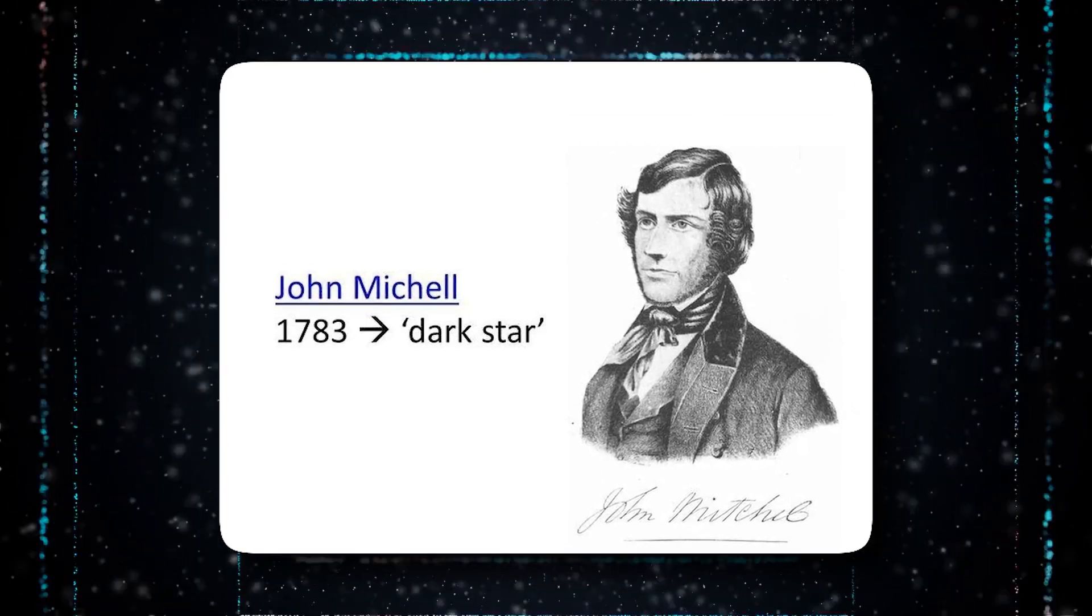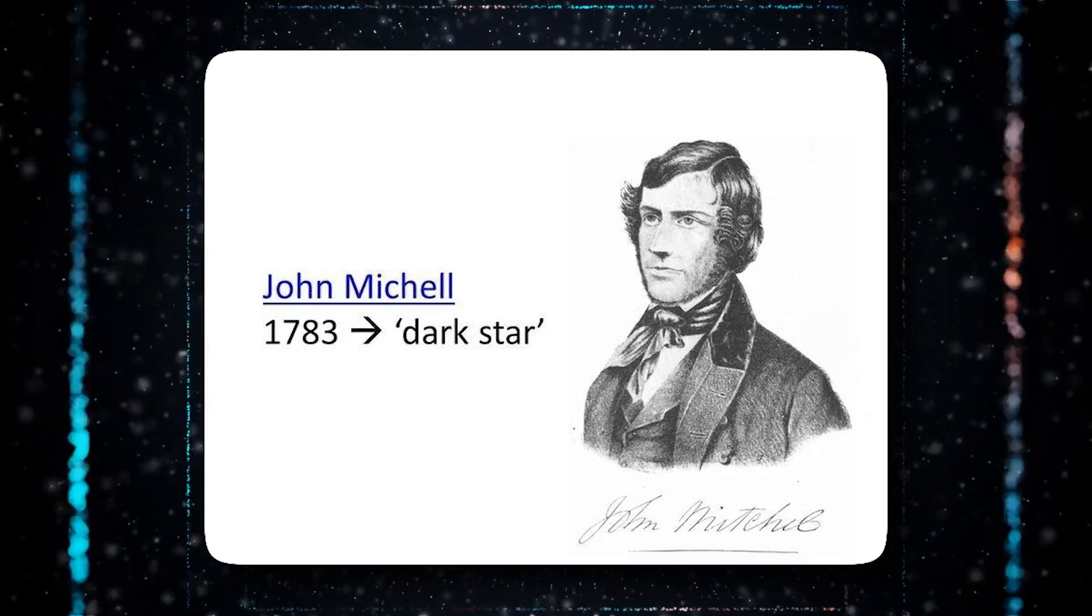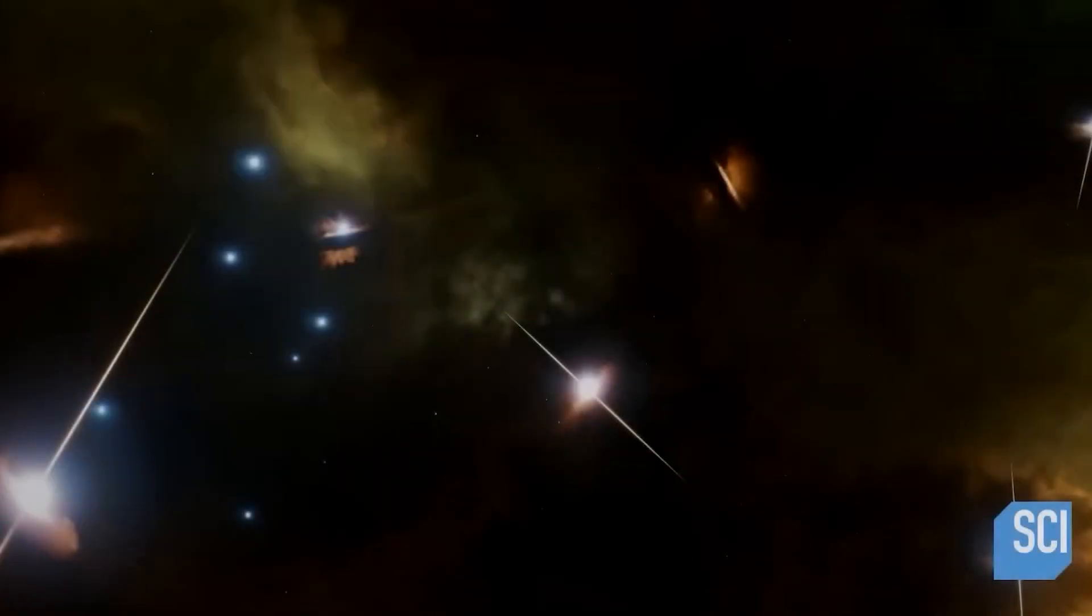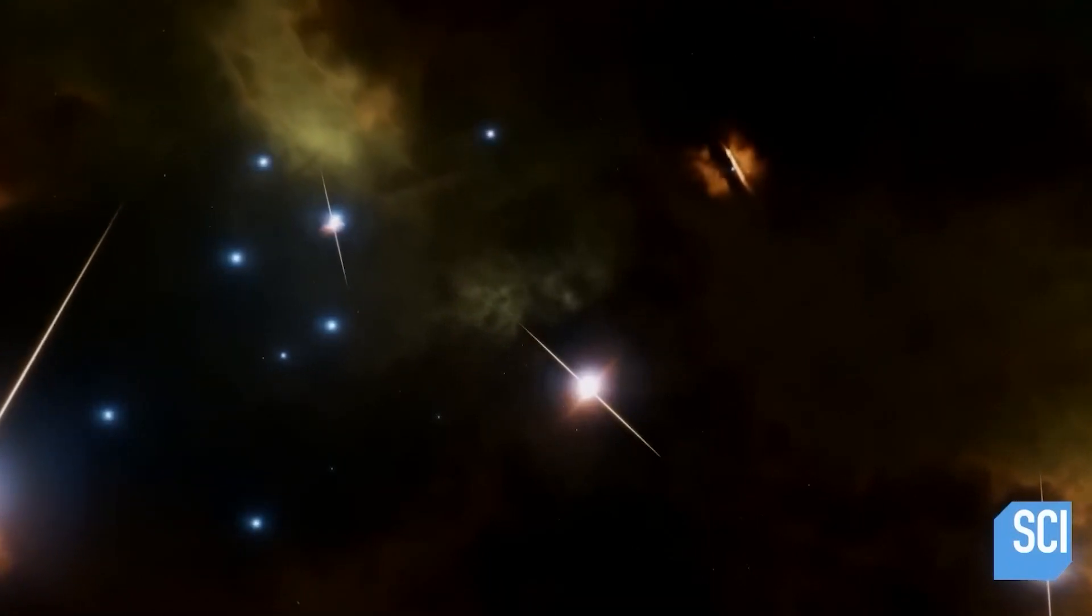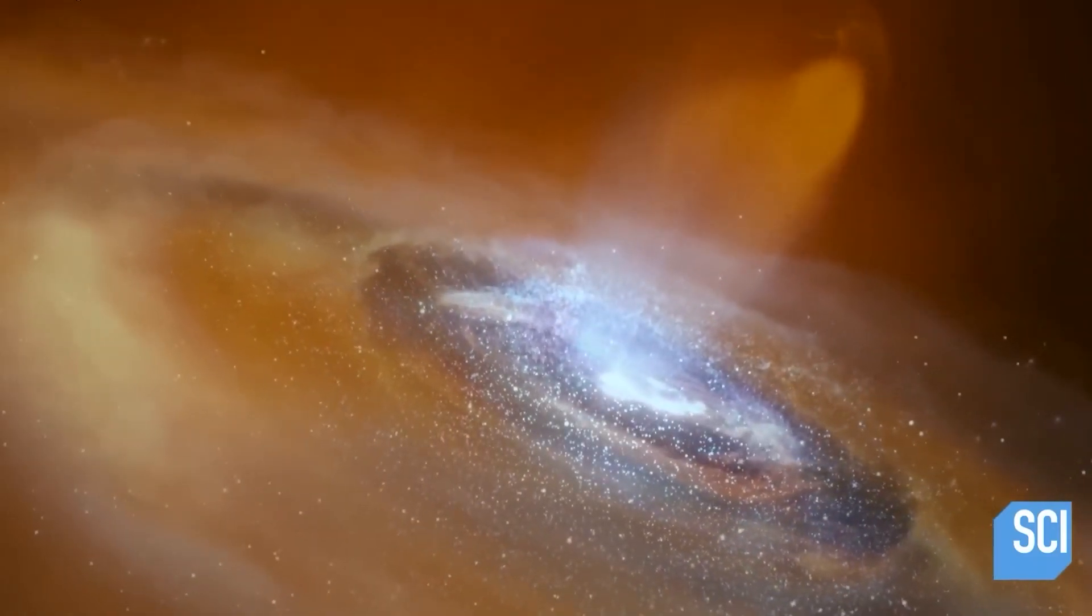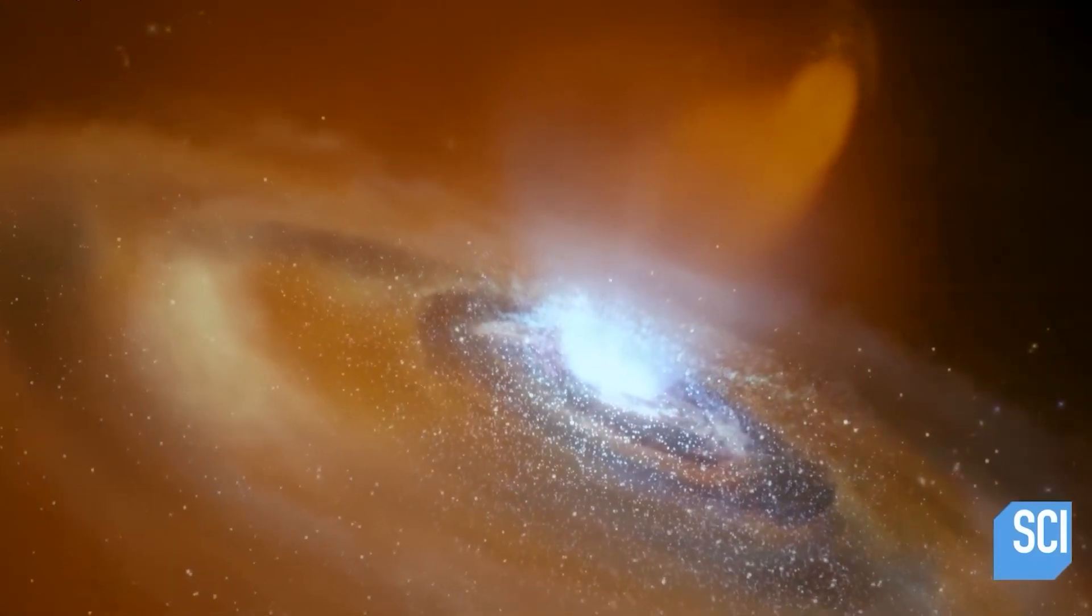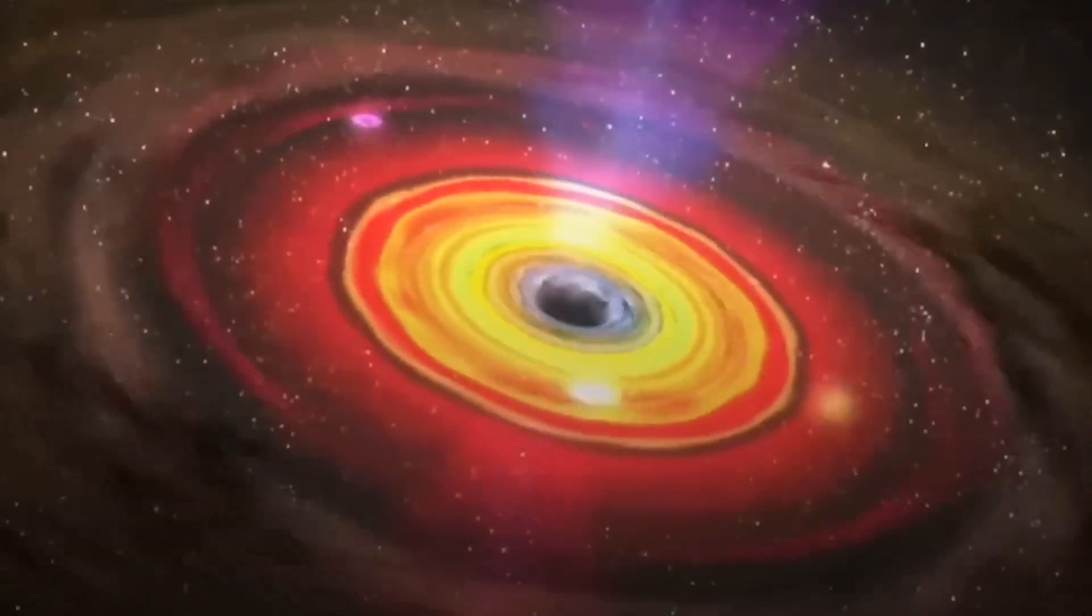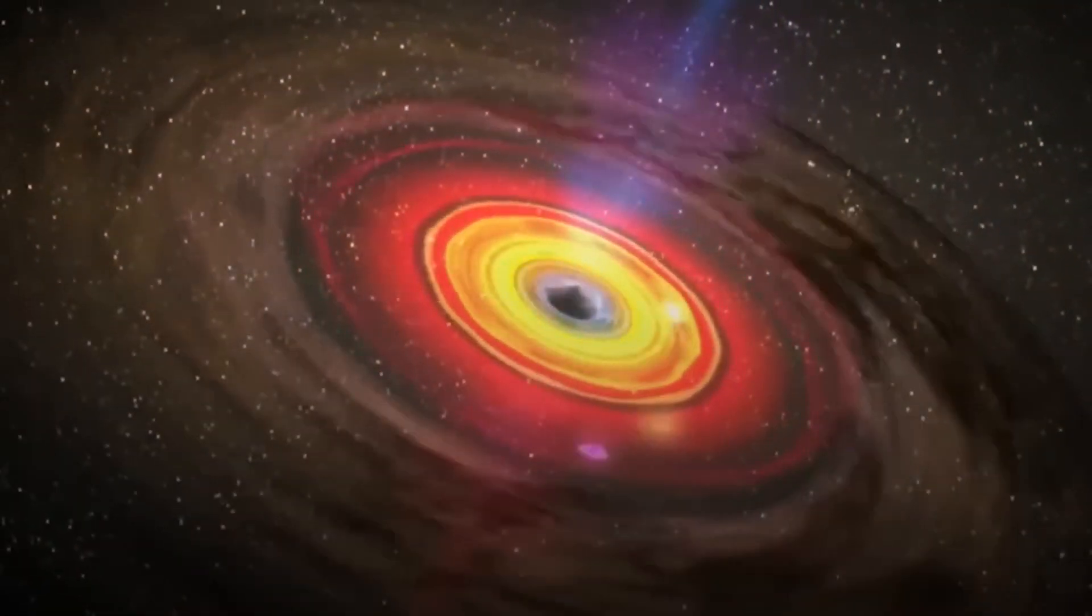It all began with a bold idea put forth by English natural philosopher John Mitchell in 1783. He suggested that there might be invisible objects in space with powerful gravity that could be detected through the way stars move around them. But it wasn't until Albert Einstein published his general theory of relativity in 1916 that the concept of black holes started to take shape.